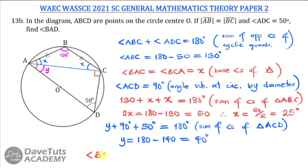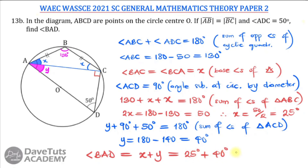We were originally asked to find angle BAD. From the diagram, angle BAD is the combination of x and y. Since x is 25 degrees and y is 40 degrees, angle BAD equals 65 degrees. We've solved this using properties of triangles, the cyclic quadrilateral, and the angle subtended at the circumference by the diameter.